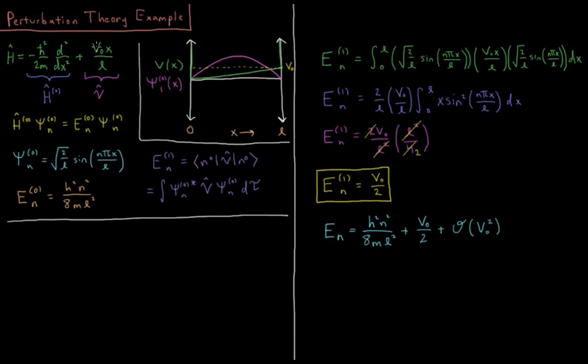Plus our potential energy, which starts at 0 at x equals 0 and goes up to V0 at x equals L, is linear in between. So our potential energy operator is V0 x over L.